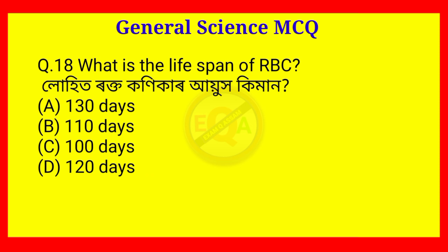Question number 18. What is the lifespan of RBC? The answer is Option D — Ovum (120 days).